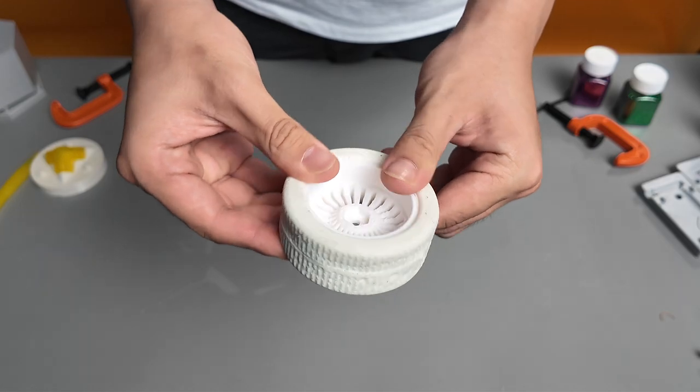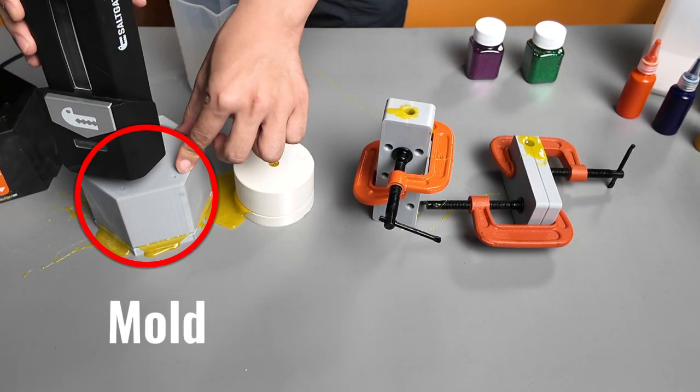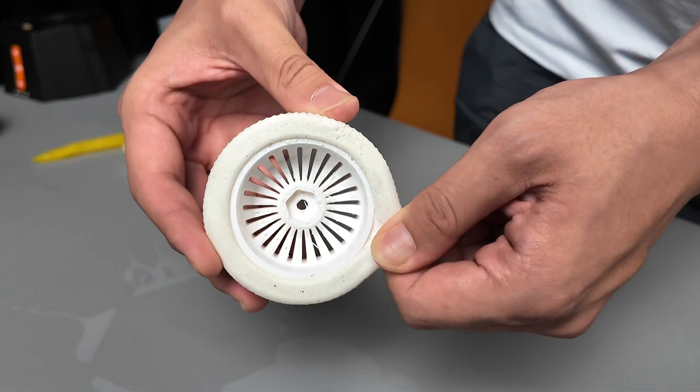Want to make a tire-like part? Its elasticity might surprise you. You can 3D print the wheel hub, place it inside the mold, and inject around it to create a tire with excellent balance and support.